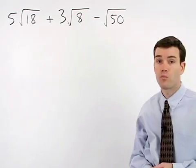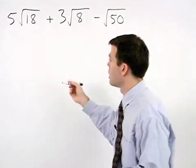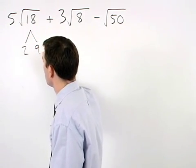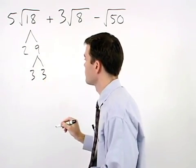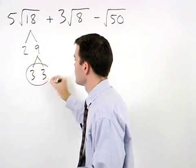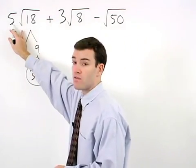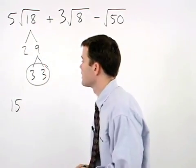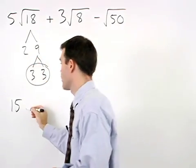But notice that we can break down each of our square roots. 18 is 2 times 9, and 9 is 3 times 3. So a 3 will come out of the radical, which multiplies times the 5, and we have a 15 on the outside. And on the inside, we're left with the 2 that did not pair up.